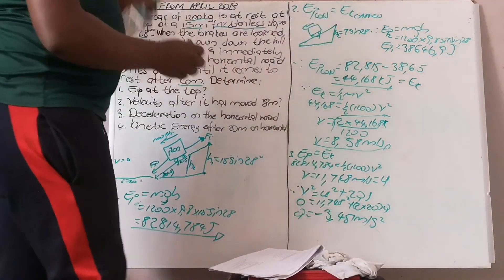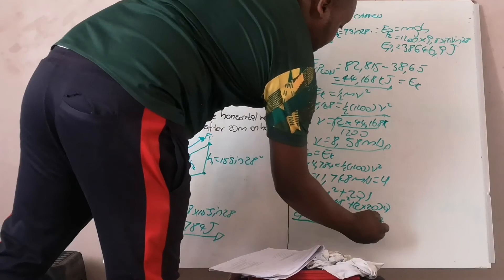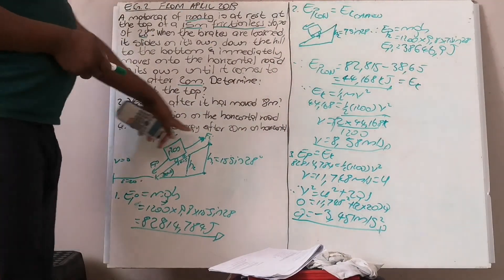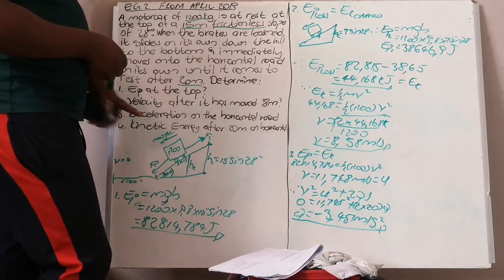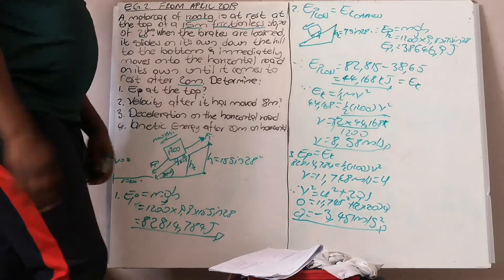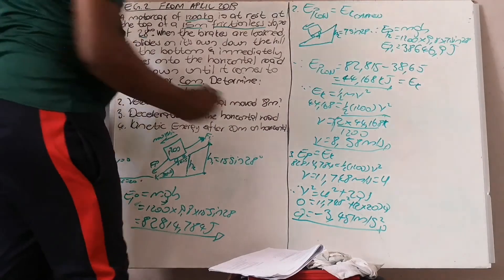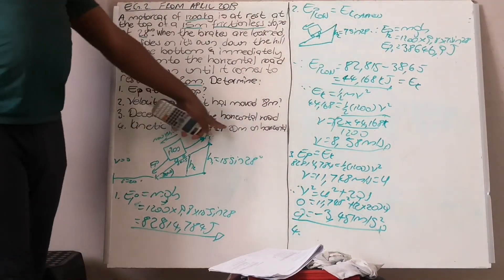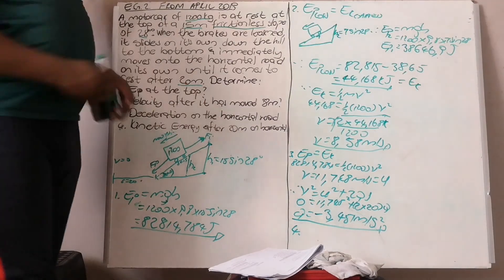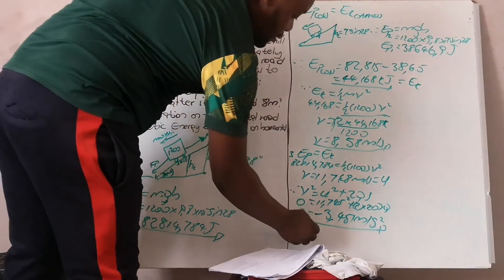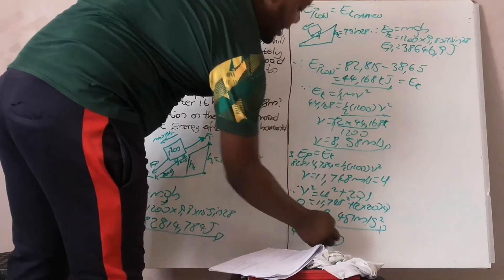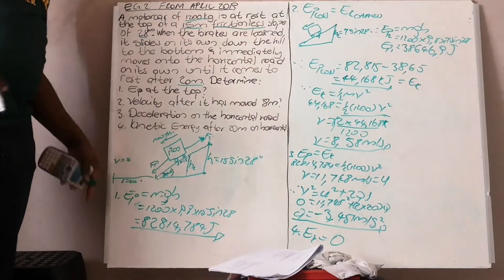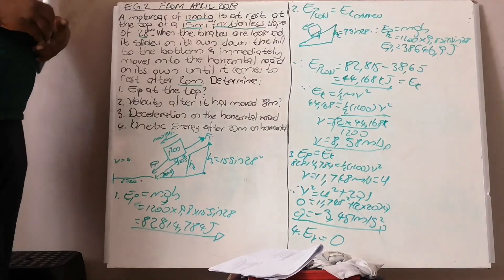You get the deceleration at the bottom of the incline. Number 4: calculate the kinetic energy after the object has moved 20 meters. After 20 meters, the object is at rest. Your kinetic energy is ½mv². Since the velocity is 0 after 20 meters, the kinetic energy is 0. The object has no kinetic energy when it has moved 20 meters, because after 20 meters it has come to rest.